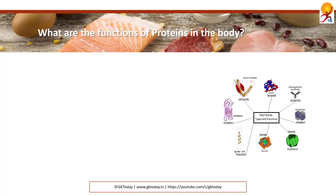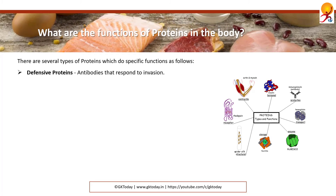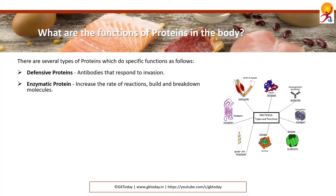What are the functions of proteins in the body? There are several types of proteins which do specific functions. There are defensive proteins which form antibodies to respond to invasion. There are enzymatic proteins which increase the rate of reactions, build and break down molecules. There are hormonal proteins like insulin and glucagon which control blood sugar.